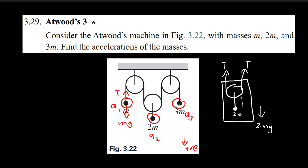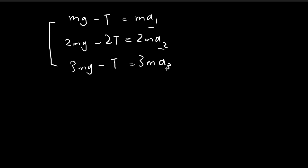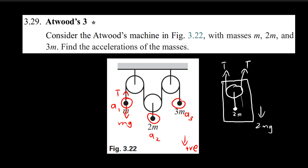For the third equation, we do the same thing. For 3m, we have 3mg pulling downwards, minus t for the tension pulling upwards, and this equals 3m times a3. We now have three equations, but four unknowns, because we also don't know what the tension is. In order to create our fourth equation, we need to establish a relationship between a1, a2, and a3. That is the key to all these Atwood machine problems.